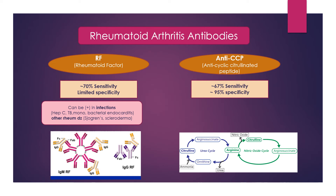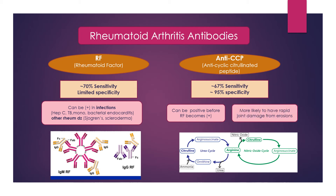When it comes to anti-CCP, it's a little bit less sensitive but much more specific — about 95% specific — which means those that test positive for anti-CCP almost always have rheumatoid arthritis and not some other disease. Anti-CCP can be positive before the rheumatoid factor becomes positive, and those who have it are more likely to have rapid joint damage from erosions.